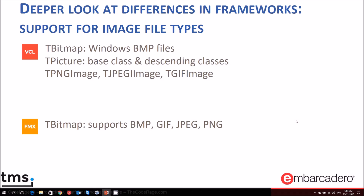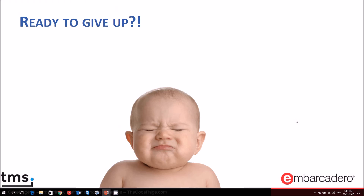Image handling also differs between VCL and FMX. In VCL, different classes handle different image types: TBitmap wraps the Windows bitmap format, and specific classes handle PNG, JPEG, and GIF. In FireMonkey, there is just one TBitmap class that supports multiple formats including Bitmap, GIF, JPEG, and PNG out of the box.